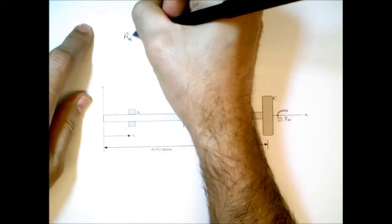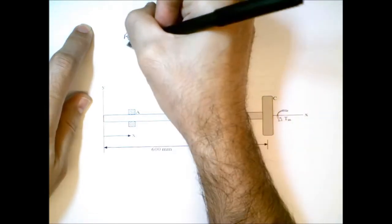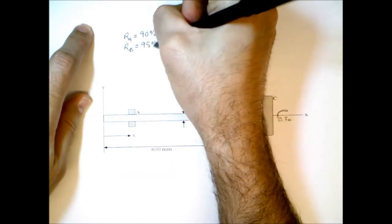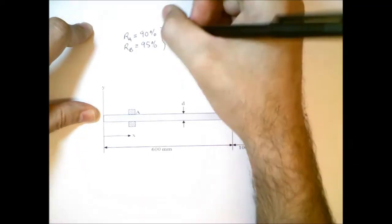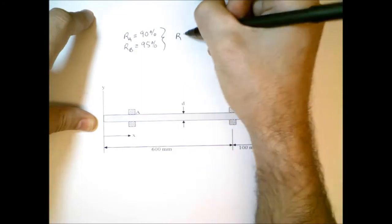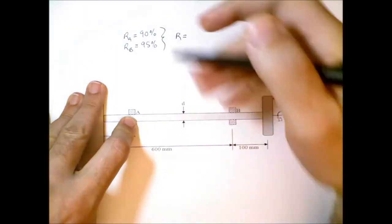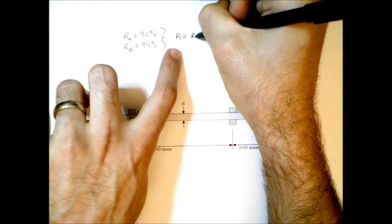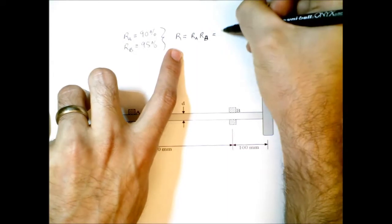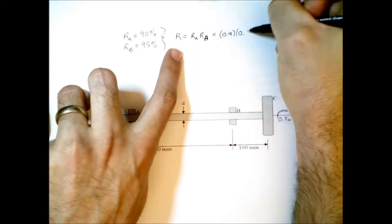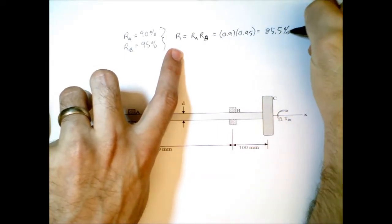So let's suppose that in this case, the reliability of bearing A is equal to 90%. And the reliability of bearing B is equal to 95%. We'd like to know what is the total reliability of all of the bearings combined. Or in other words, what's the reliability of these two bearings together. So it turns out that the total reliability is just a product of the reliability of bearing A and bearing B. So if we multiply those out, we find that the reliability is greater than 85%.